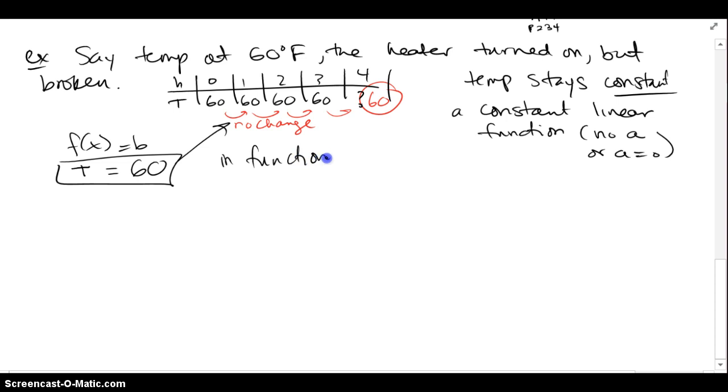Or in function notation, I could say the input is h, so T of h is equal to 60 degrees, and no matter what h is, T is always going to be 60. That's what a constant function does. You give it an input, it doesn't care, it's always going to spit out the exact same thing.